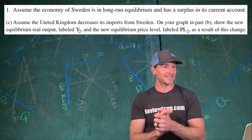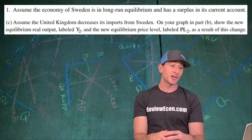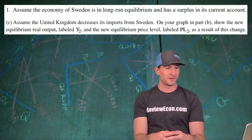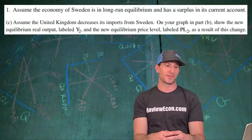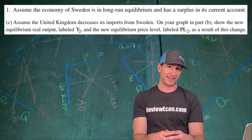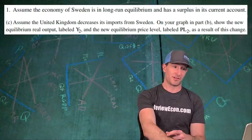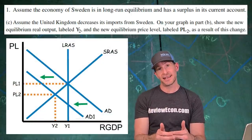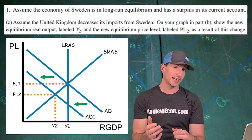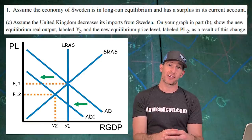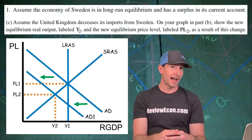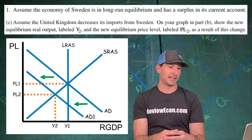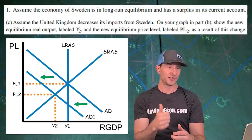For part C, we assume the United Kingdom increases its imports from Sweden. On our graph from part B, we show the new equilibrium real output labeled Y2 and the new equilibrium price level labeled PL2. This is an ASAD model graph for Sweden. Since the United Kingdom is importing more, Sweden will be exporting more. Exports are an aggregate demand shifter. Since there will be more exports, that shifts the aggregate demand curve to the right, increasing the price level and increasing the quantity of real output. We mark both Y2 and PL2.